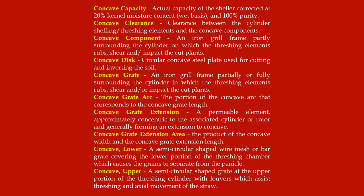Concave clearance: clearance between the cylinder shelling/threshing elements and the concave components. Concave component: an iron grill frame partly surrounding the cylinder on which the threshing elements rub, shear and impact the cut plants. Concave disc: circular concave steel plate used for cutting and inverting the soil.